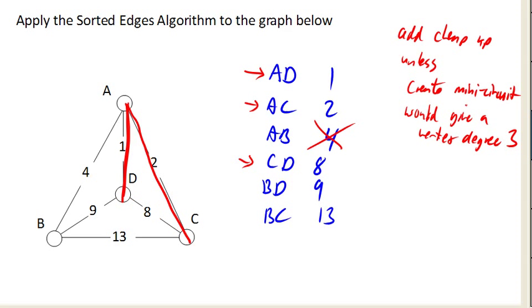Okay. So moving on to this one. B to D, cost of 9. No issues there. So we can go ahead and add that one. And then my only other choice is this one, the B to C, for a cost of 13.